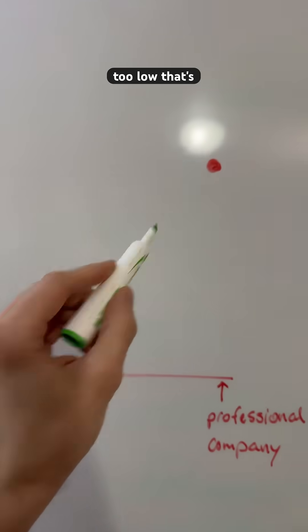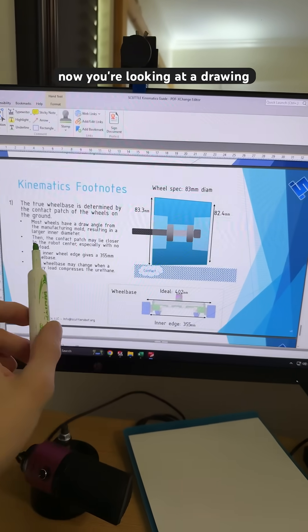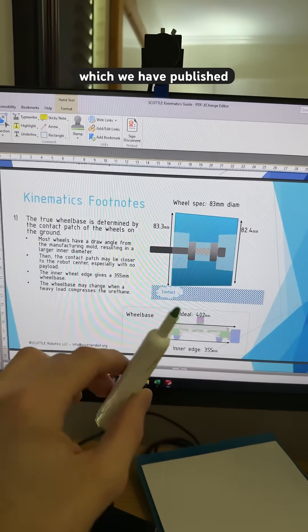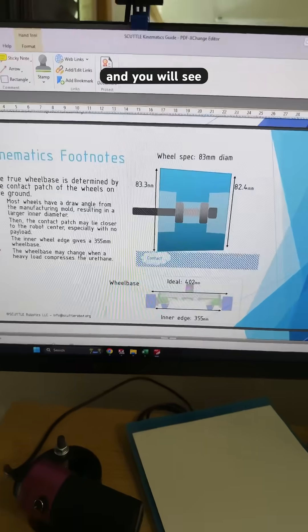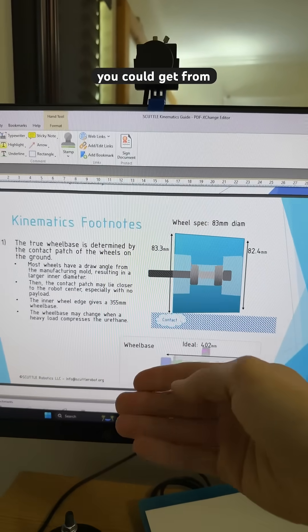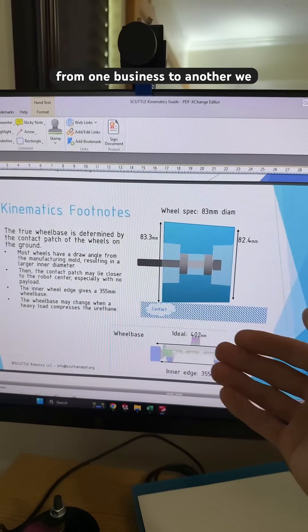So that's too low, that's too high, and this is where I think we should be. Now you're looking at a drawing and diagram from the kinematics guide of the Scuttle robot which we have published, and you will see that this is below the level of fidelity that you could get from a pure mechanical engineer who's passing drawings from one business to another.